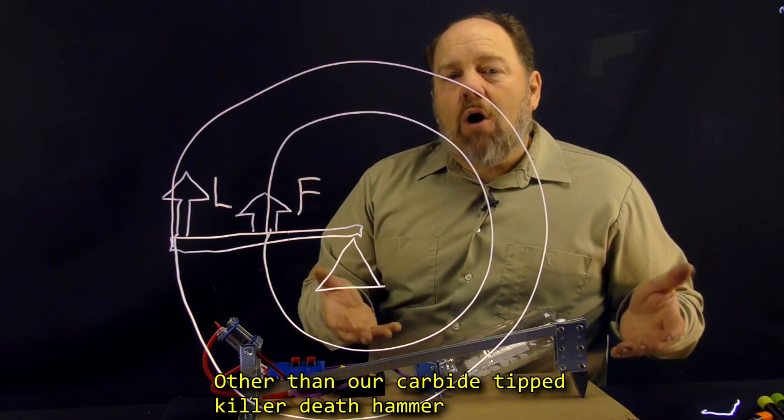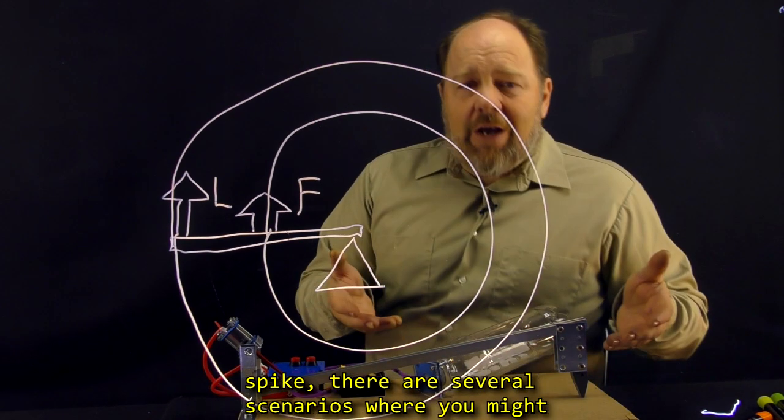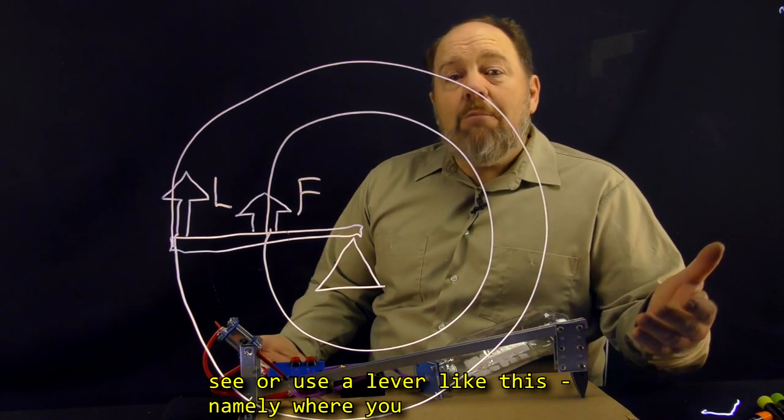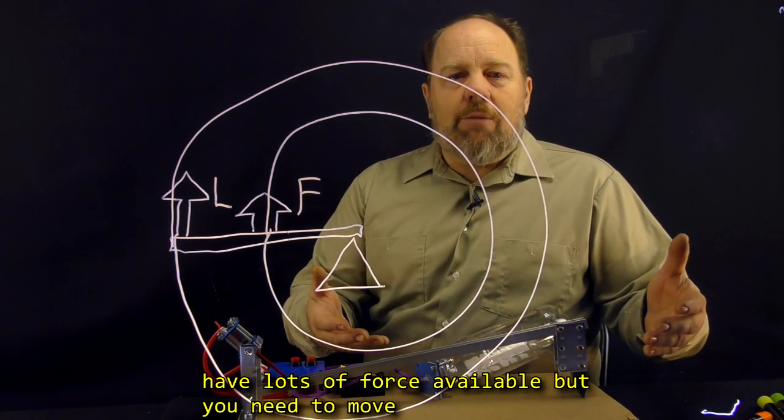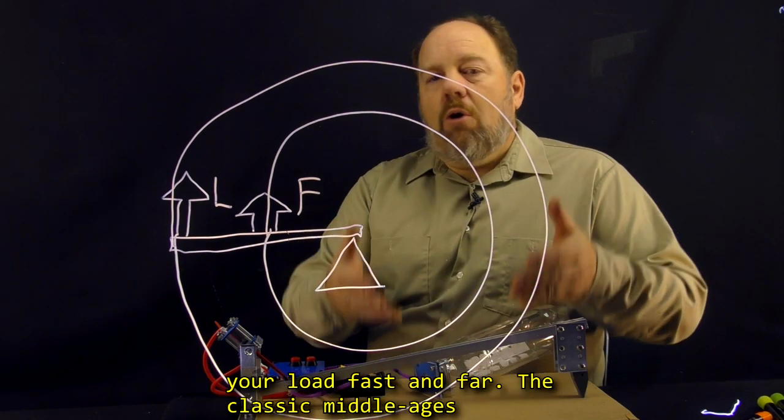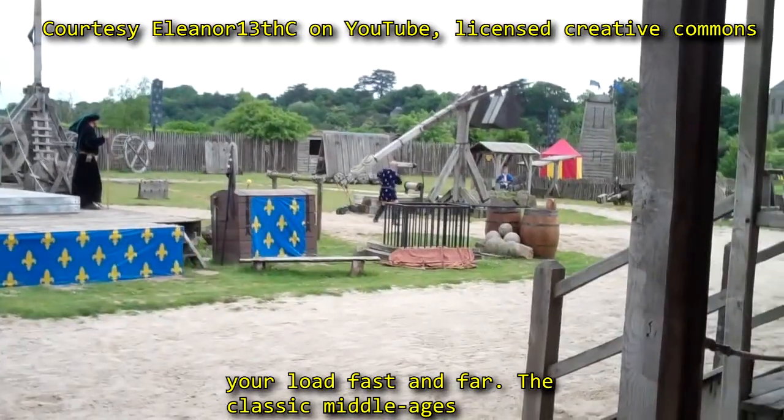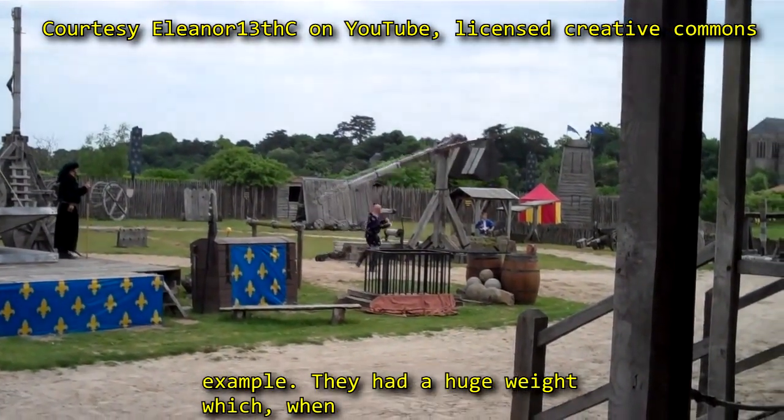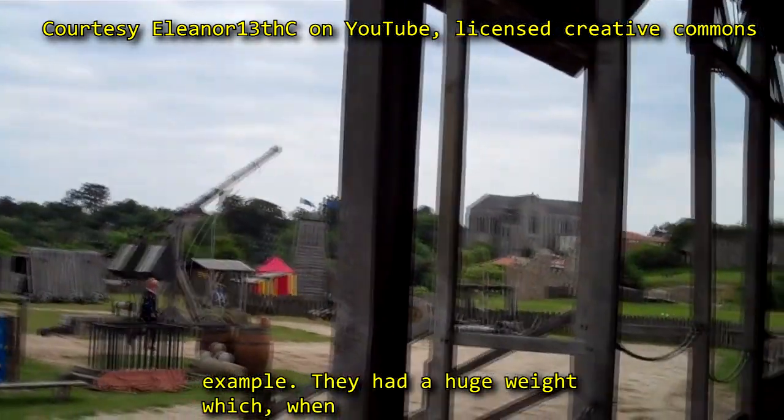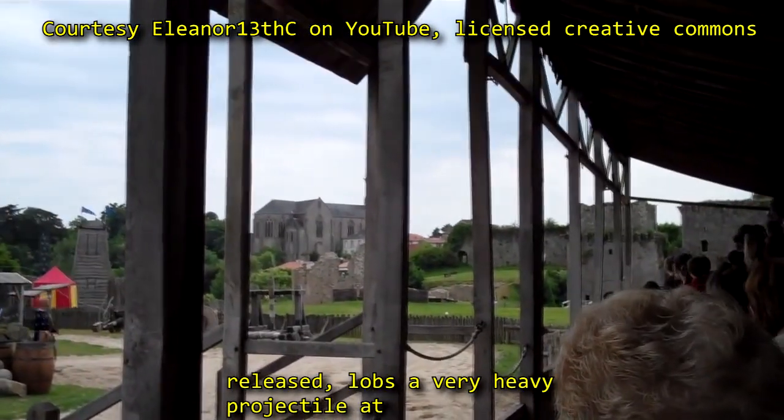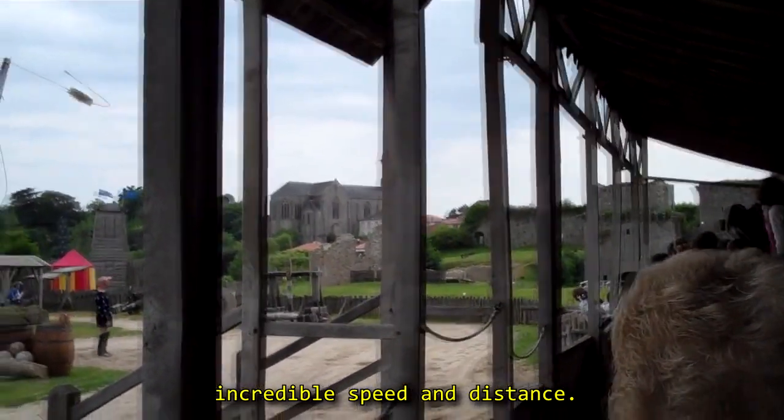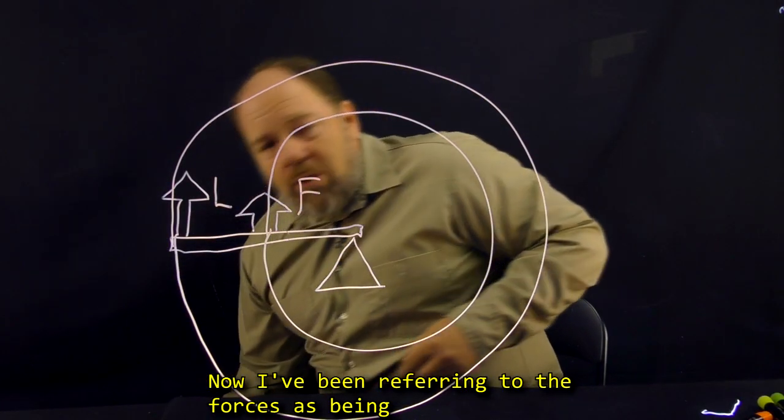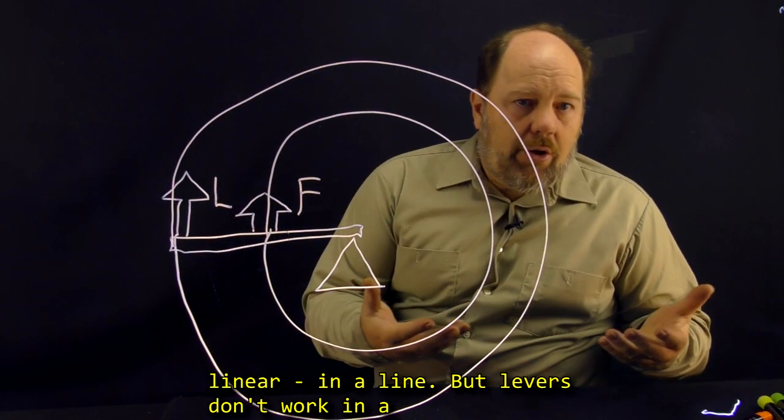So other than our carbide tipped killer death hammer spike, there are several scenarios where you might see or use a lever like this. Namely, where you have lots of force available, but you need to move your load fast and far. The classic middle ages siege weapon called the trebuchet is a classic example. They had a huge weight which, when released, lobs a very heavy projectile at incredible speed and distance.